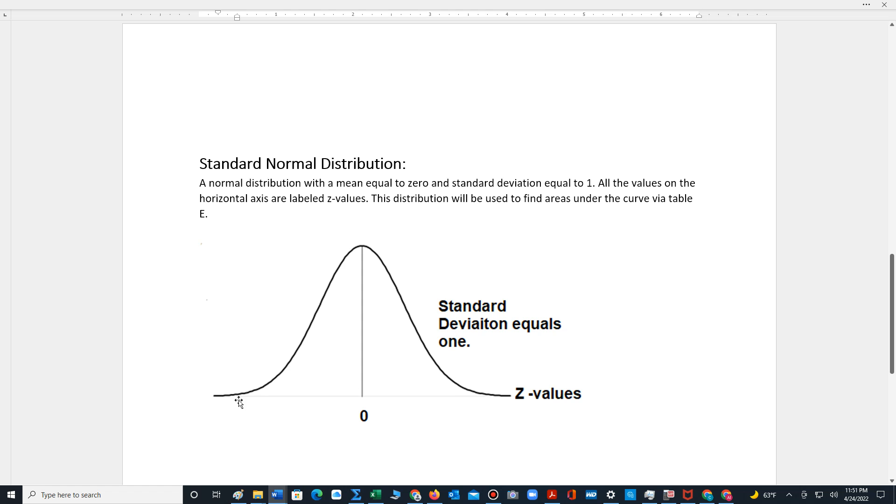All values on the horizontal axis are labeled z-values. These are clues that we're working with the standard normal distribution.